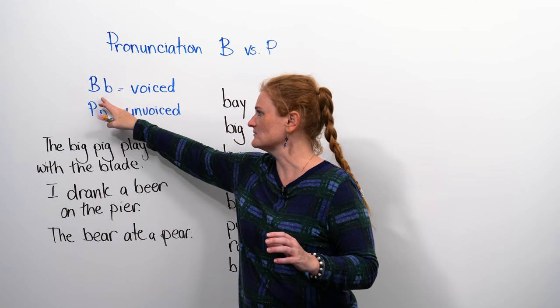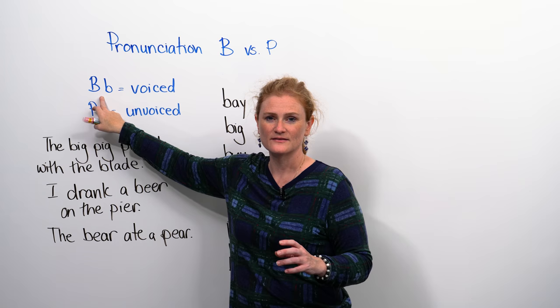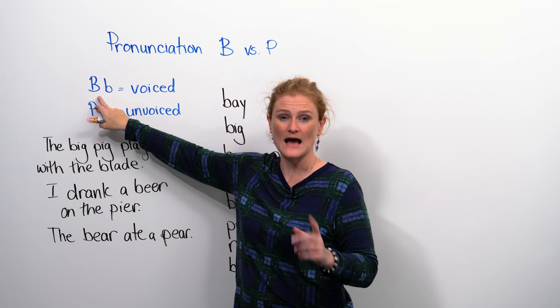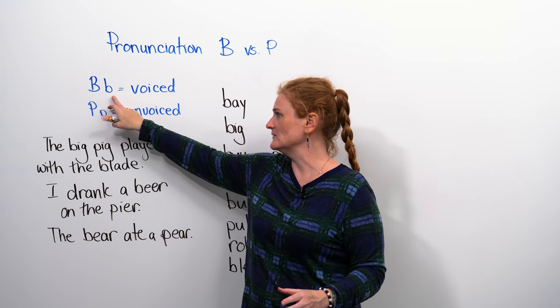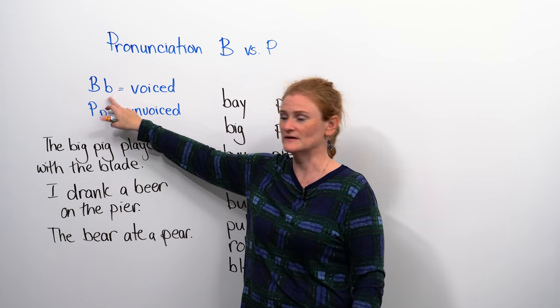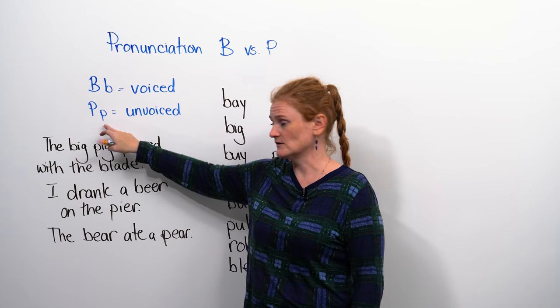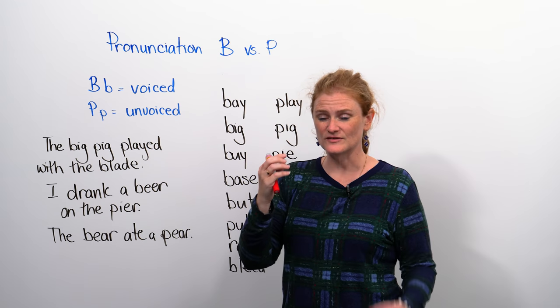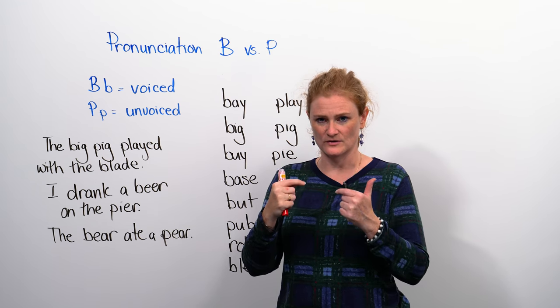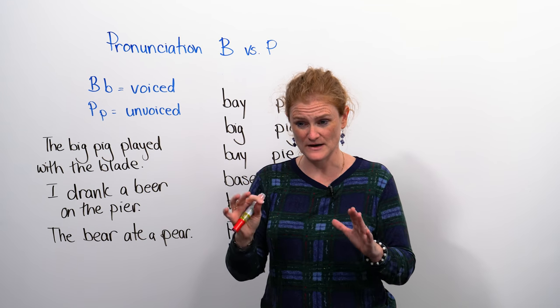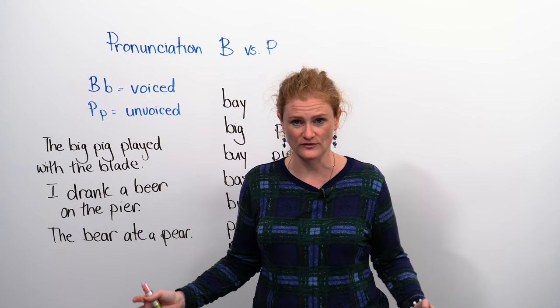First of all, let's look at the written words. The B, or the written letter, the B like this is a capital or a big B, and then we have the lowercase or the small b. Then we have the P, capital P, and lowercase p. It is the same mouth movement that we're going to make, so this is why it's confusing, but there's one huge difference, and the difference is voiced and unvoiced.